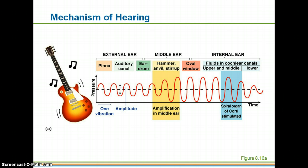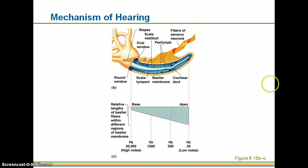This diagram shows the pathway of vibration. A guitar creates sound waves that travel through the external ear — the pinna funnels it through the auditory canal, vibrating the eardrum, then through the hammer, anvil, and stirrup, vibrating the oval window. Fluids in the cochlear canals then stimulate the organ of Corti by moving the tectorial membrane. The stapes vibrate the oval window, fluids within the cochlea move, and that causes the tectorial membrane to vibrate.